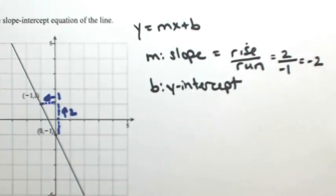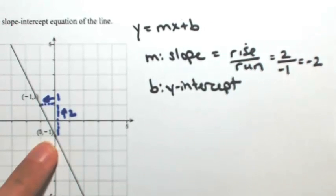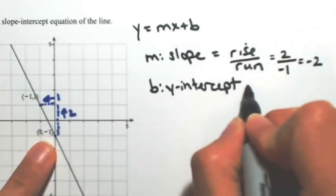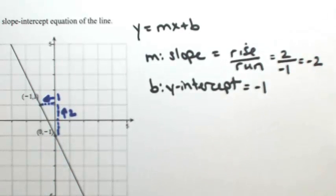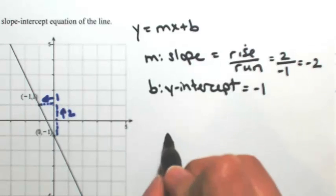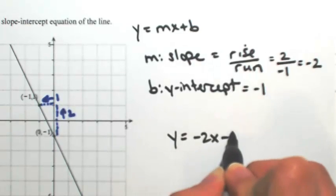The y-intercept is simply the point where it crosses the y-axis, and that's been identified at zero negative one. So the y-intercept is negative one. Putting all this together, the equation is going to be y equals negative two x minus one.